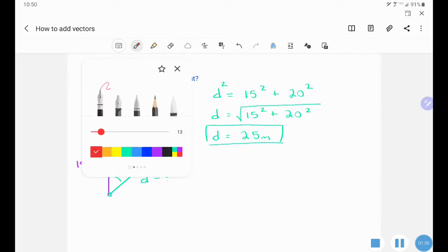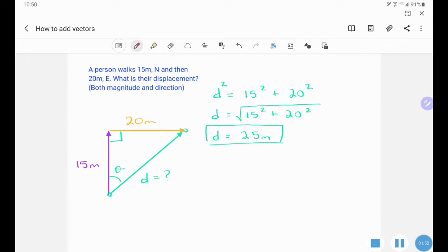To get the angle, we will use our favorite trig function here. I have the opposite side and the adjacent side. So I can use tangent. So tangent of theta equals 20 over 15. So theta is going to be tan inverse of 20 over 15, which is going to be 53.1 degrees.